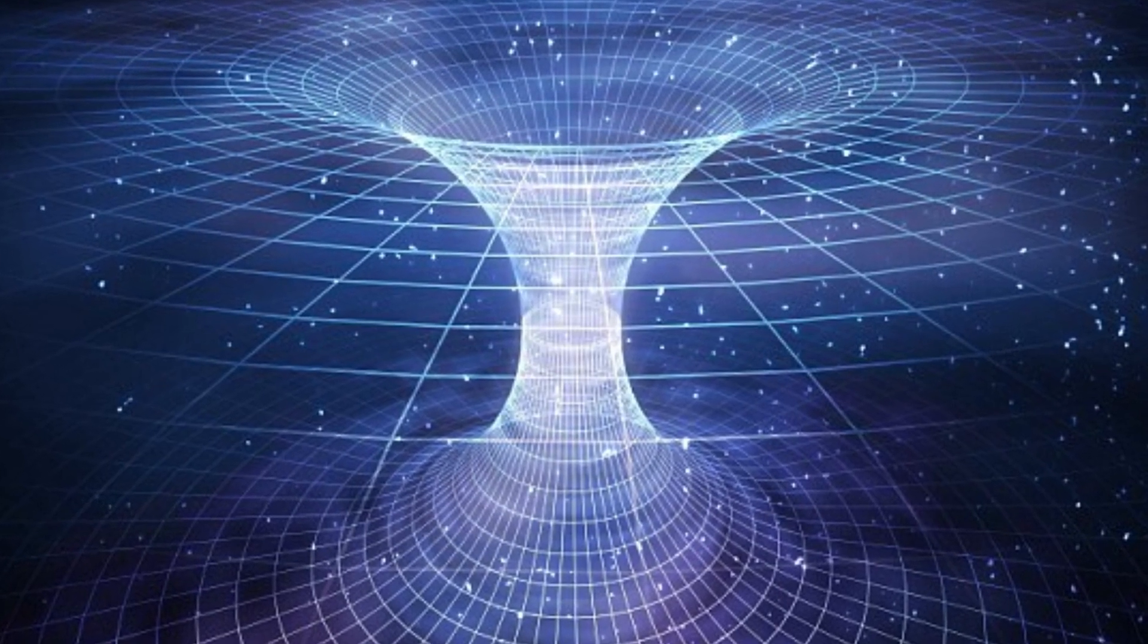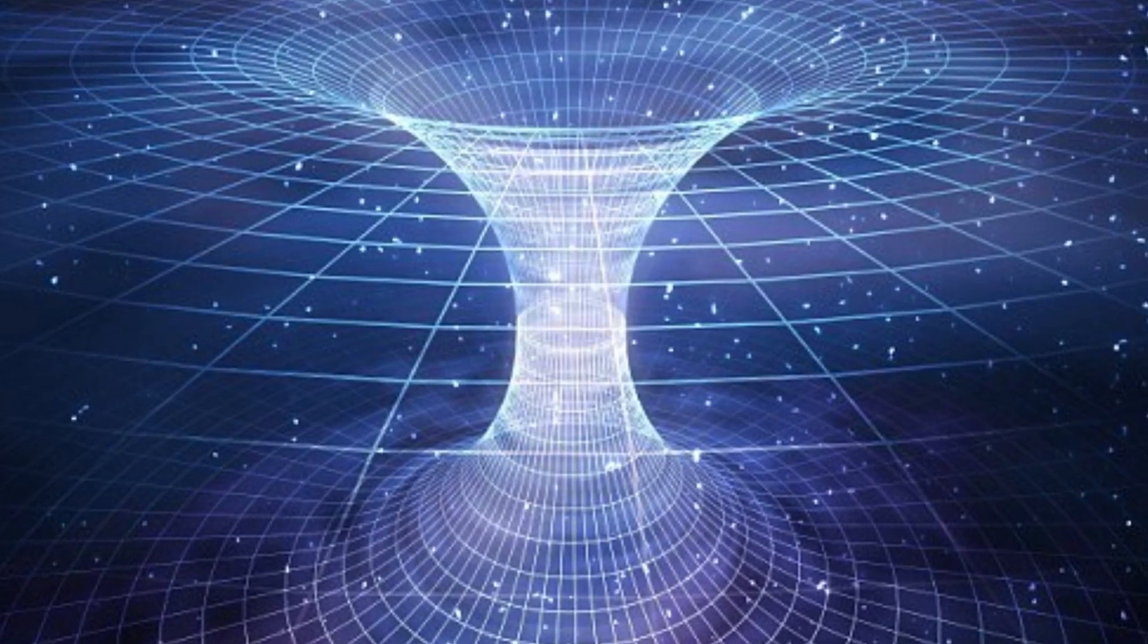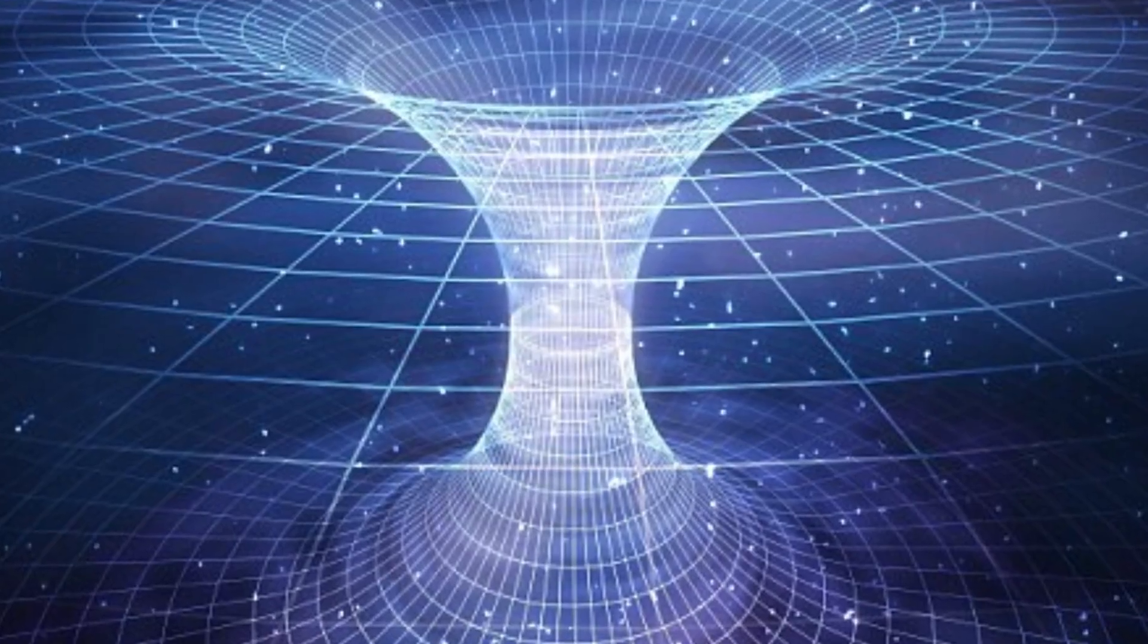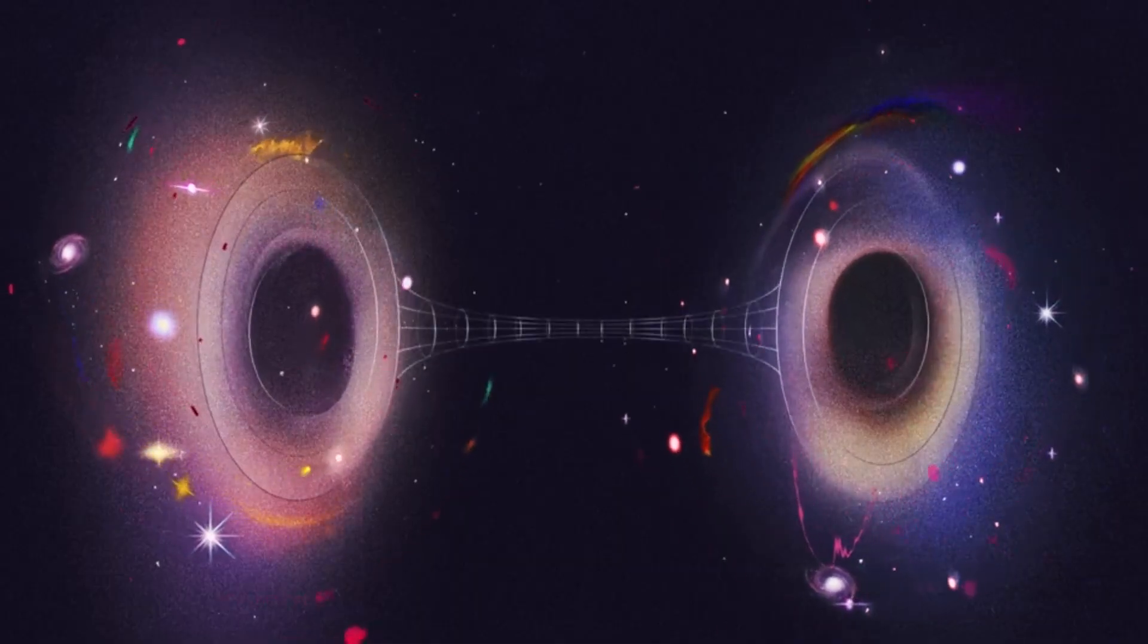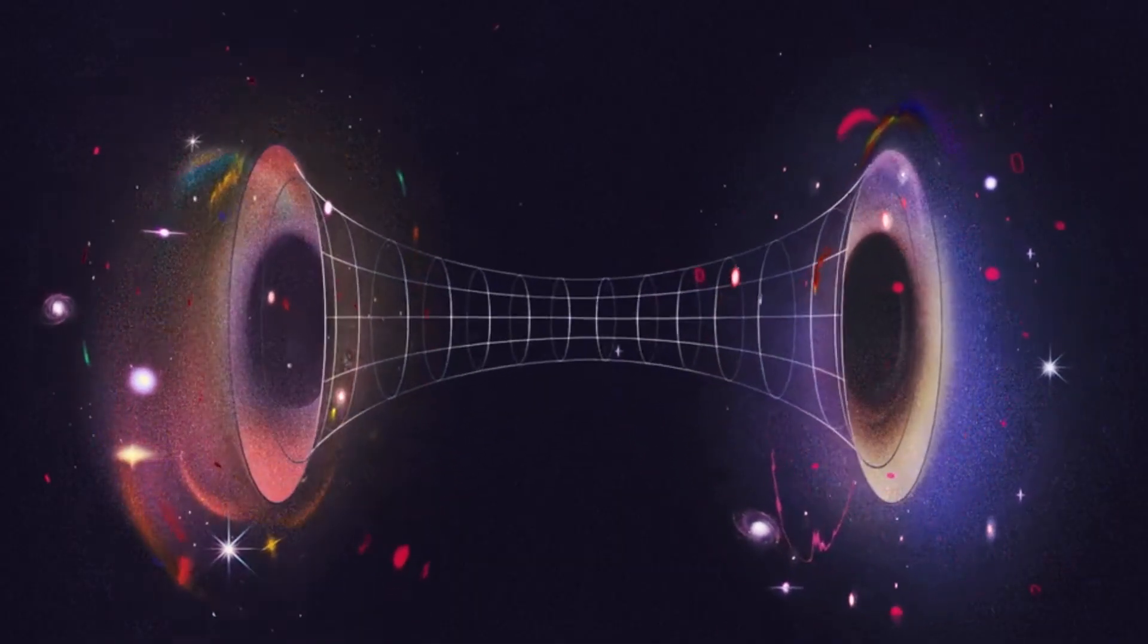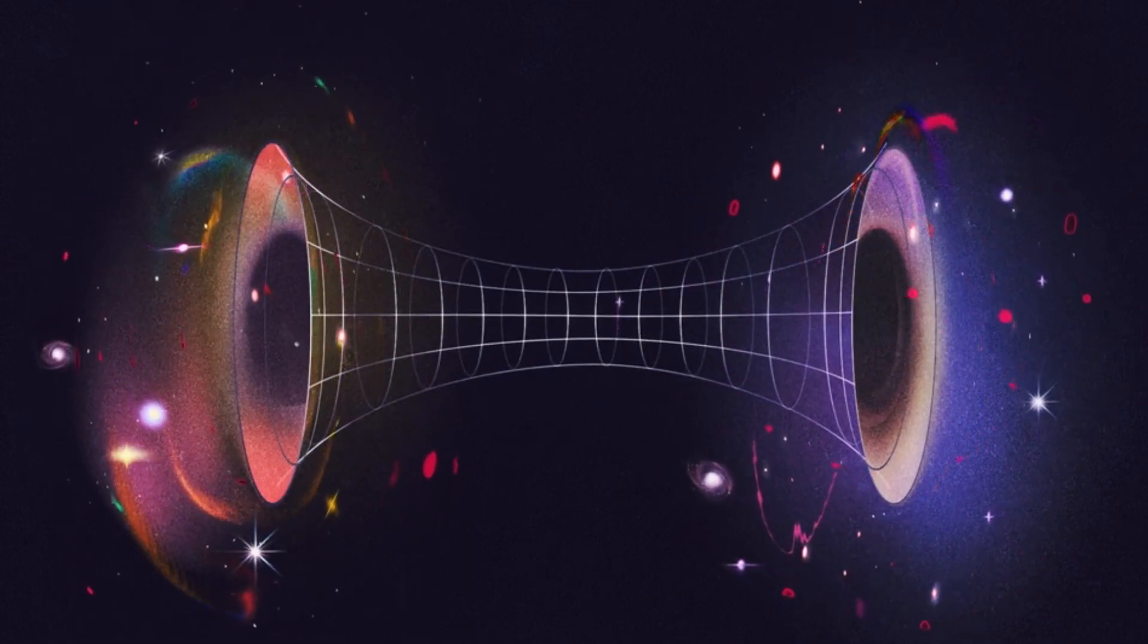Space-time can be warped and distorted, although it takes an enormous amount of matter or energy to create such distortions. In the case of the wormhole, a shortcut is made by warping the fabric of space-time.